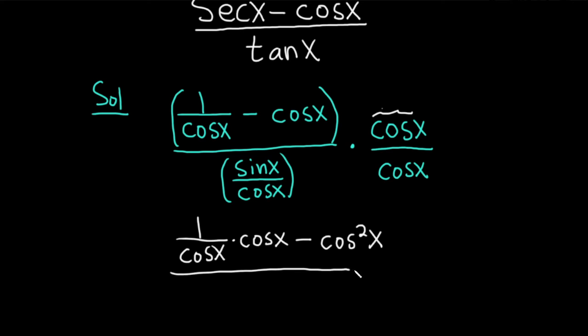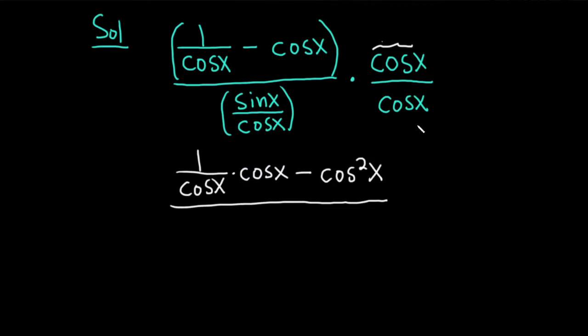All divided by, in the denominator, we have cosine x times sine over cosine. You can think of this as cosine x over 1, so these cancel. We just have sine x on the bottom.